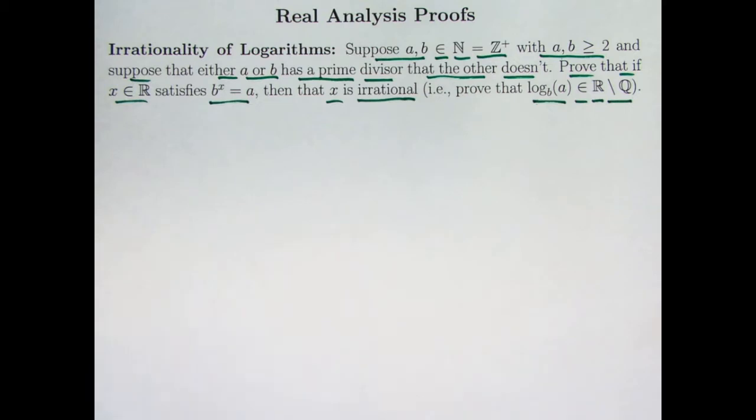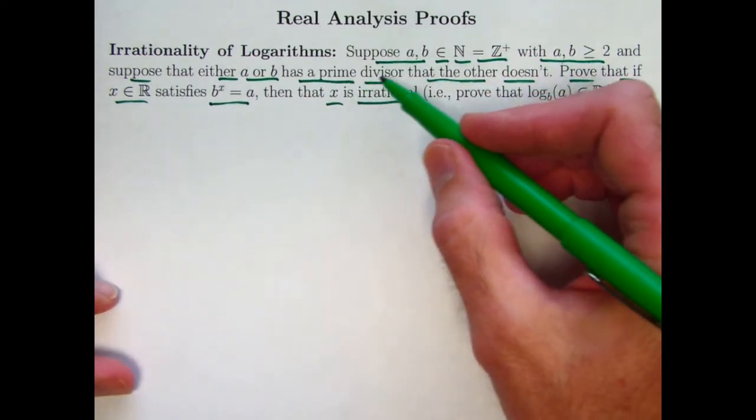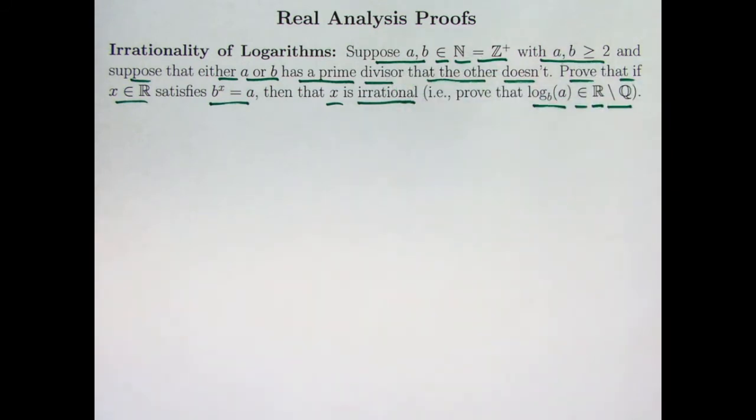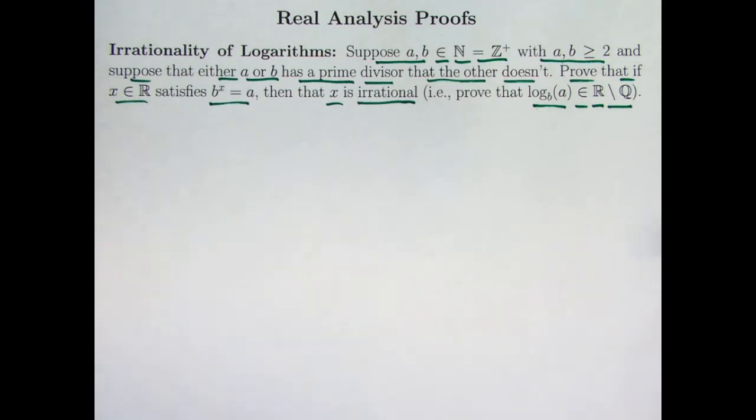There are plenty of logarithms that are rational. For example, log base 2 of 8 is 3. Log base 9 of 3 is 1 half. Log base 9 of 27 is 3 halves. Certainly there are plenty of logarithms that are rational, so we need some sort of condition, and this is one condition. Situations where this would happen would be when a and b are distinct primes or relatively prime. Their greatest common divisor would be 1, or even if their greatest common divisor was less than both of them, would be situations where they have a prime divisor where the other one doesn't.